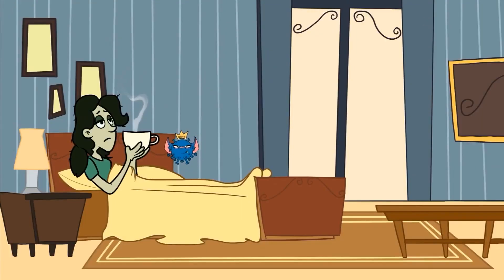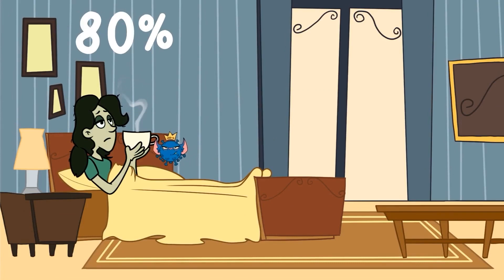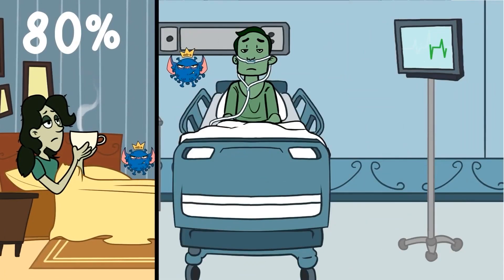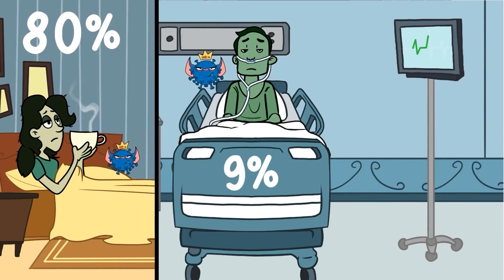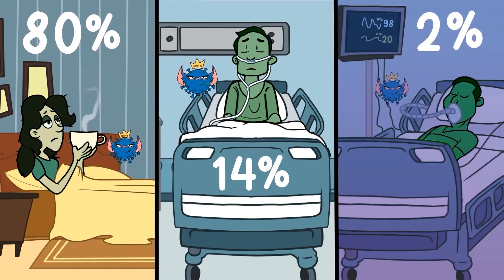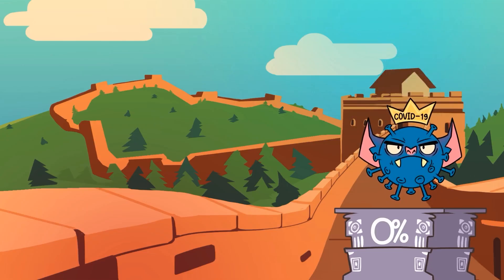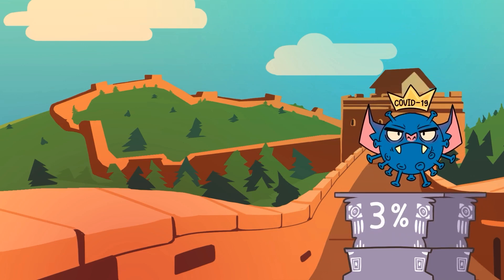80% of the people who show symptoms develop a mild flu-like illness and can be observed at home. 14% of infected patients will go on to develop severe complications from the virus, most commonly pneumonia. Approximately 6% become critically ill. The initial COVID fatality rate reported in China was as high as 3%, but this number appears to vary across countries and time.